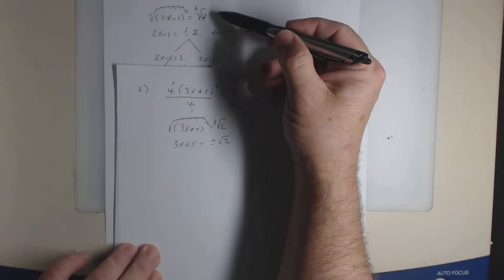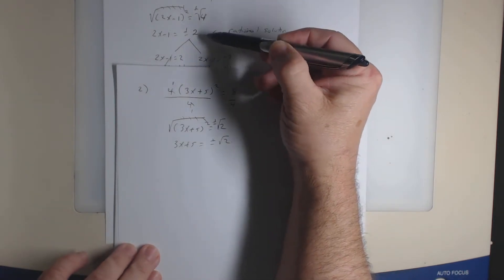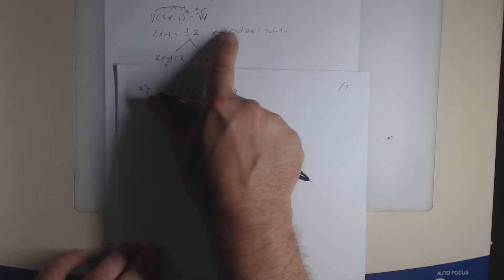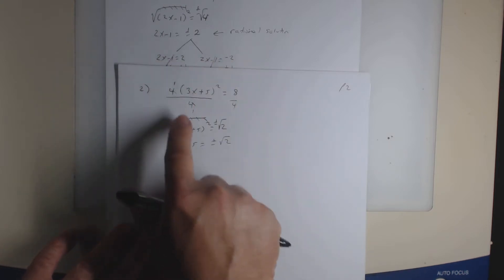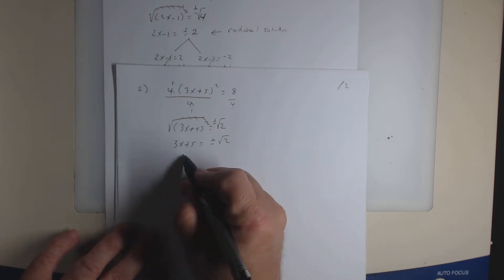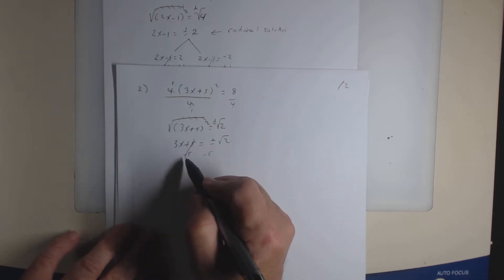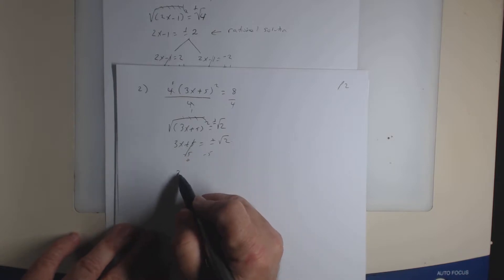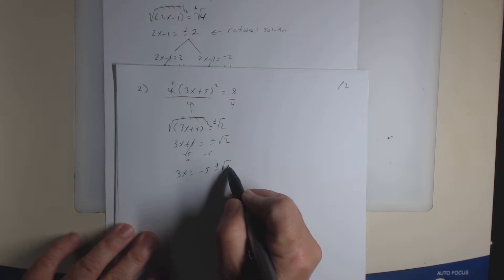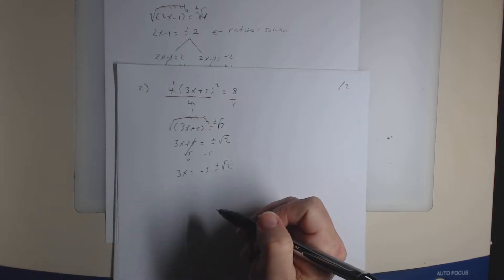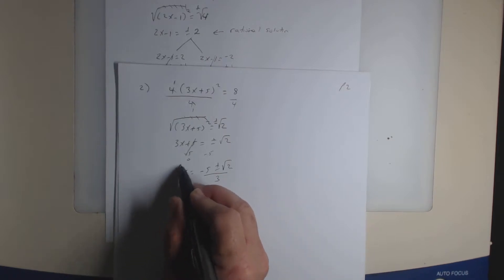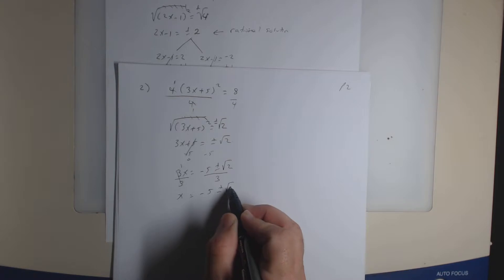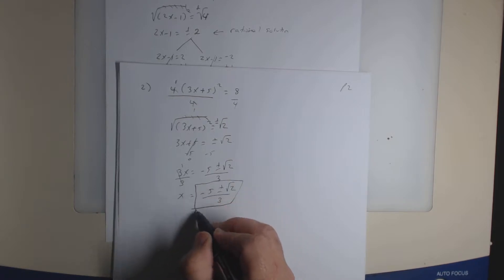Now the difference between this step and the previous one: the plus or minus 2 was a rational number so the solution was rational. But what kind of number is the square root of 2? Irrational. So since you're left with the square root of 2, you're going to subtract 5 from both sides. 5 minus 5 is 0. So 3x equals negative 5 plus or minus the square root of 2. Then divide both sides by 3, and your answer is (negative 5 plus or minus the square root of 2) divided by 3.